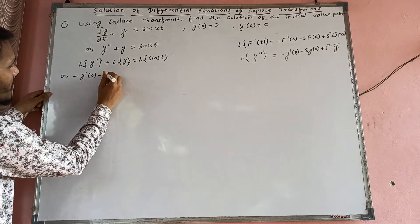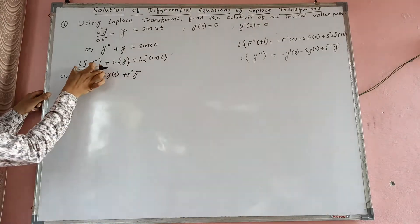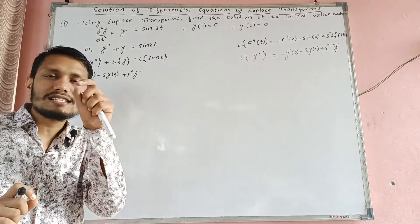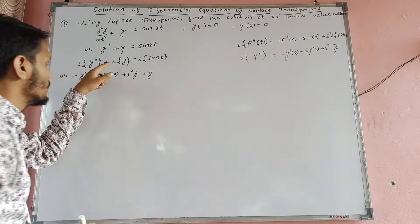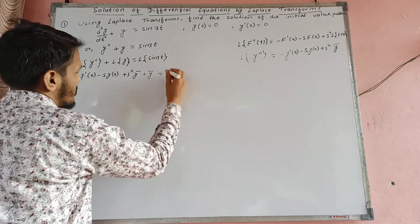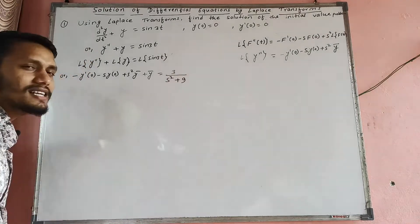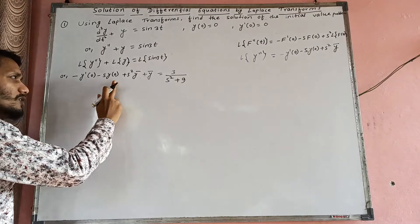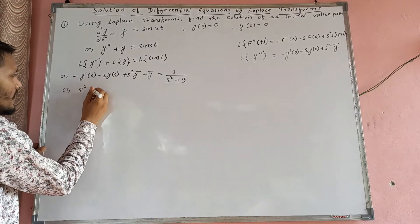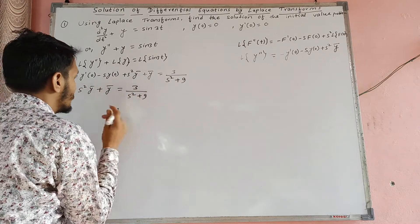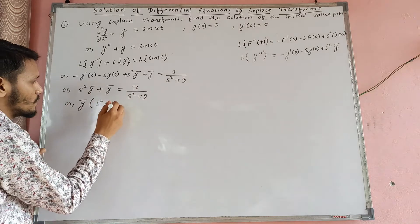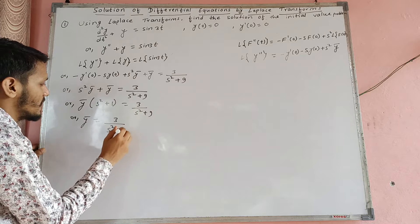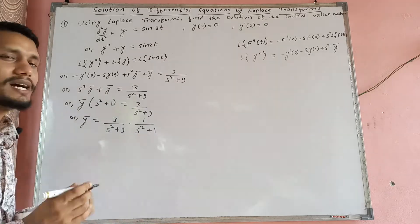Laplace transform of y lai y-bar suppose gari. y-bar is equal to 3 upon (s²+9). Initial conditions y(0) = 0 and y'(0) = 0 substitute garda: (s²+1) times y-bar = 3 upon (s²+9). Therefore y-bar = 3 / ((s²+9)(s²+1)).